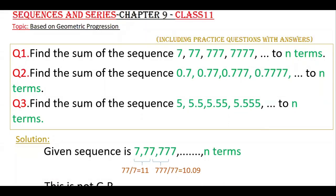Hello everyone, today I am going to tell the solutions of these three problems which are based on GP. This is from the sequences and series chapter, class 11. The first one is: find the sum of the sequence 7, 77, 777, etc., till n terms.